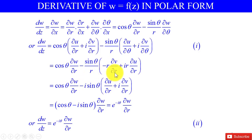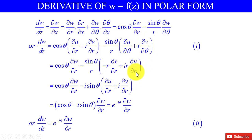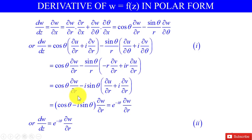Applying the Cauchy-Riemann equations: ∂v/∂θ = r · ∂u/∂r. Substituting, dw/dz = cosθ · ∂w/∂r - sinθ · (∂u/∂r + i ∂v/∂r).